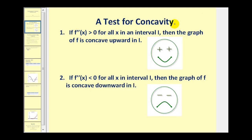A test for concavity deals with the second derivative. If the second derivative of the function is positive or greater than zero for all x in an interval, then the graph is concave upward in the interval. If the second derivative is less than zero or negative for all x in an interval i, then the graph of the function is concave downward in the interval.